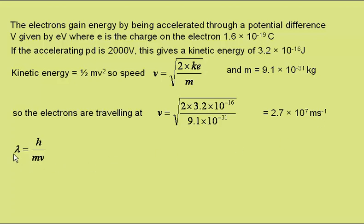Lambda is equal to h over mv, Planck's constant over momentum, which is 6.63 × 10⁻³⁴ joule seconds, Planck's constant, over the mass of the electron times the speed of the electrons. This gives a de Broglie wavelength of 2.7 × 10⁻¹¹ m, a very small wavelength. This is around about the wavelength we'd expect of X-rays.